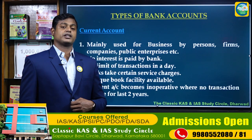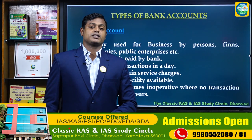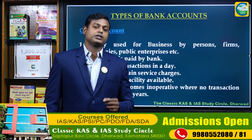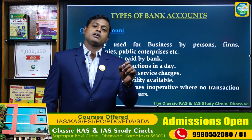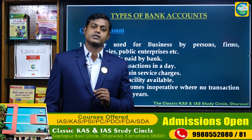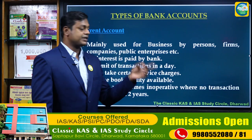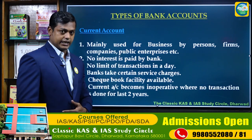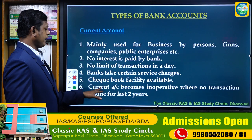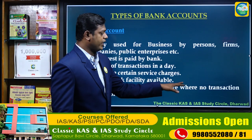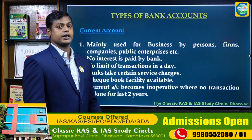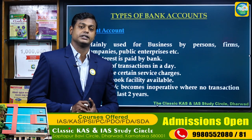Point number five: checkbook facility is available in a current account. Point number six: to get a checkbook, you need to fill one more application with your account details. Point seven: a current account becomes inoperative where no transaction is done for the last two years. It is very important to maintain and keep operating your account.